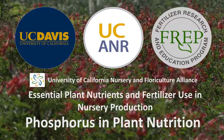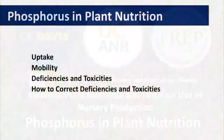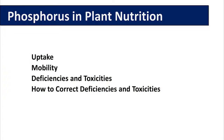This video focuses on phosphorus and plant nutrition, specifically in regards to container production. We will go over four areas of phosphorus nutrition: its uptake into the plant, its mobility within the plant, deficiency and toxicity symptoms in the plant, and finally how to correct these deficiencies and/or toxicities if they occur in your production system.